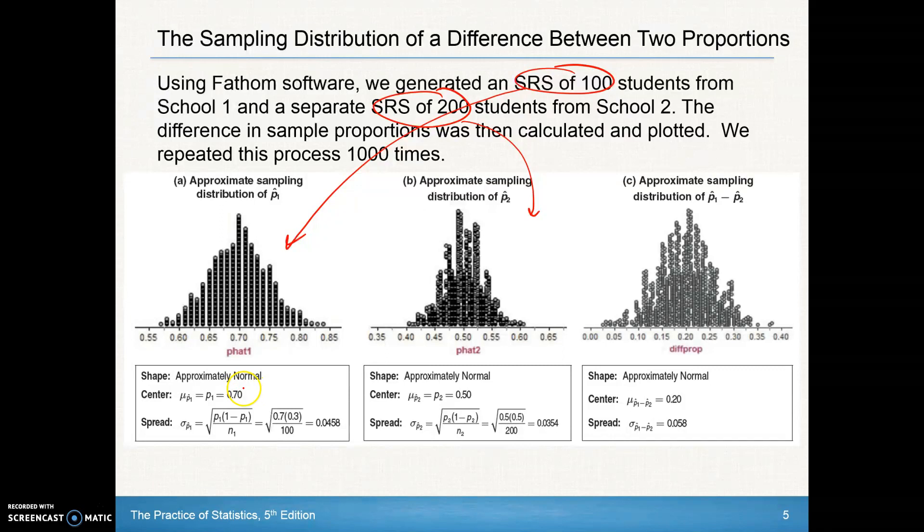We can see that our center of distribution 1 is at 0.70 as expected, and the center of distribution 2 is at 0.5. The mean of a difference is just to subtract the two. Here we can find the spread, the standard deviation: P1 times Q1 divided by N1, square rooted. But remember, we can't subtract standard deviations—we'll look at how to use the formula.